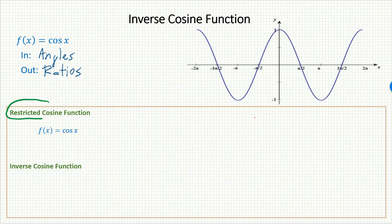That means we'll have to consider the restricted cosine function. Well, can we just use the same restriction we did with sine? Can we just take the portion of the graph from negative π over 2 to π over 2? You can see that's not going to work. That section still fails the horizontal line test. We're going to have to take a different section.